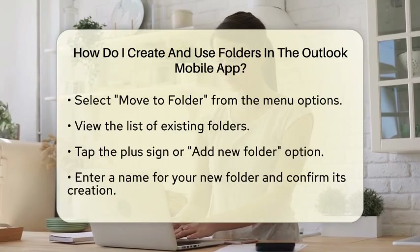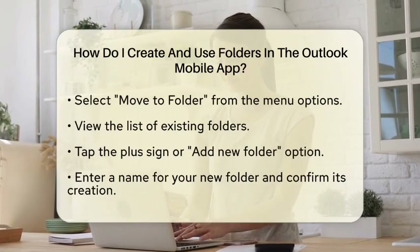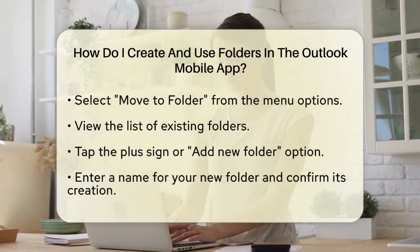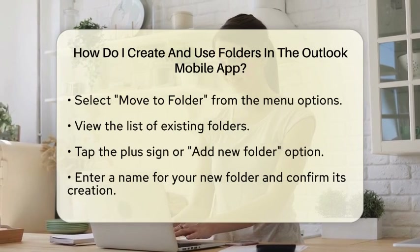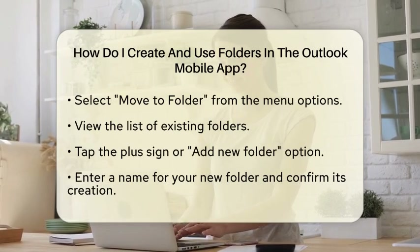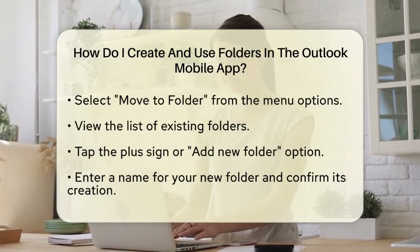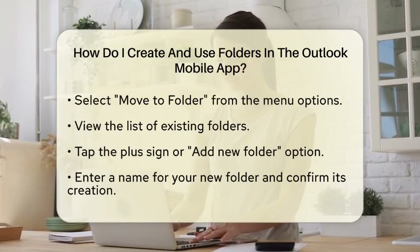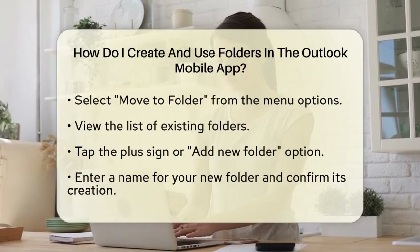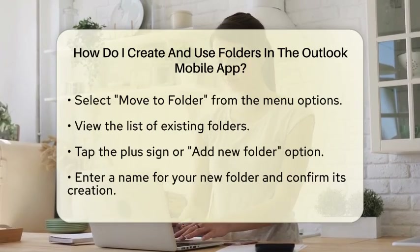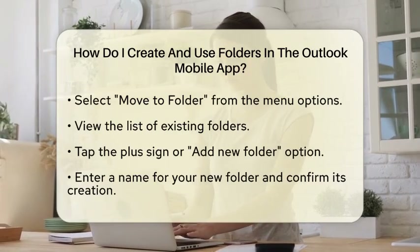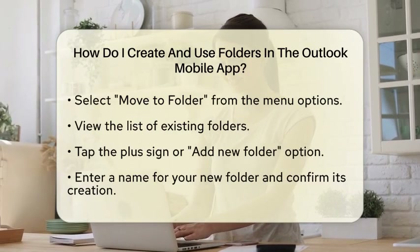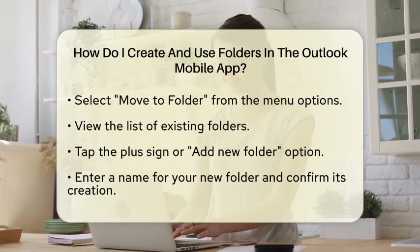Now, to create a new folder, look for a plus sign or an option that says Add New Folder. Tap on it. You will then be prompted to enter a name for your new folder. Once you have typed in the name, confirm the creation of the folder. The email you initially selected will now be moved into this new folder.